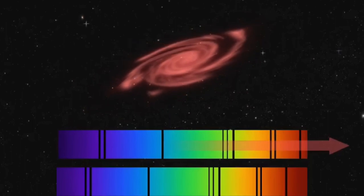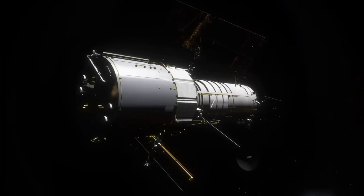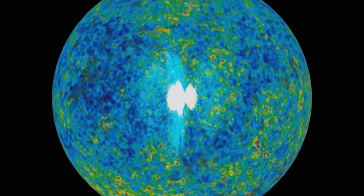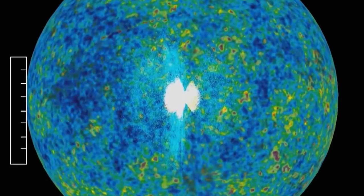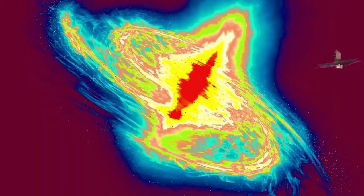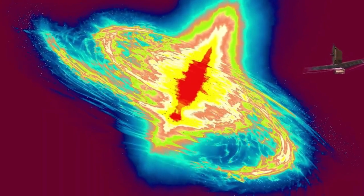As these celestial entities reside at cosmological distances, the light they emit undergoes a profound transformation. The wavelengths of this light extend into the infrared spectrum, beyond the range perceptible to the human eye.